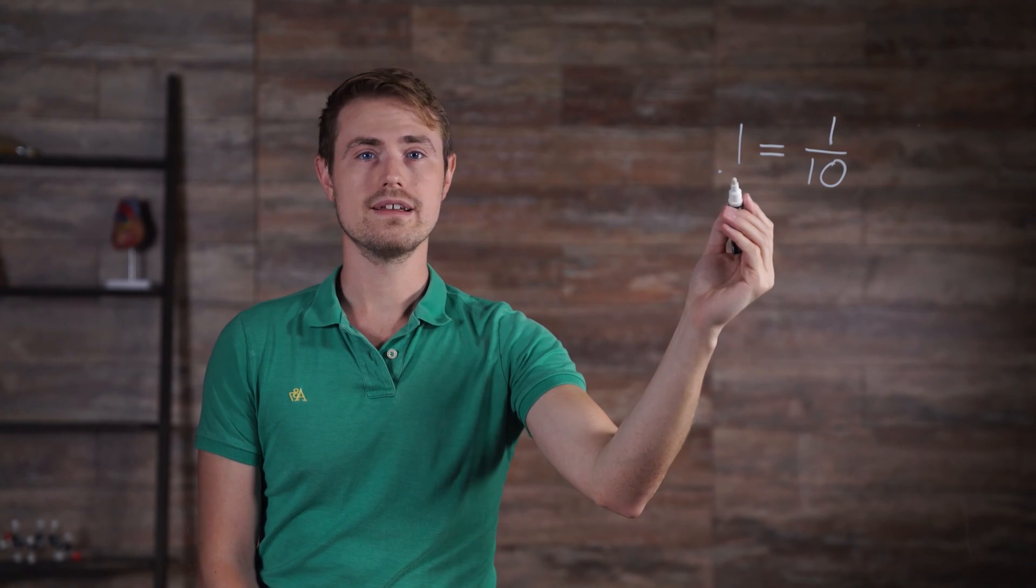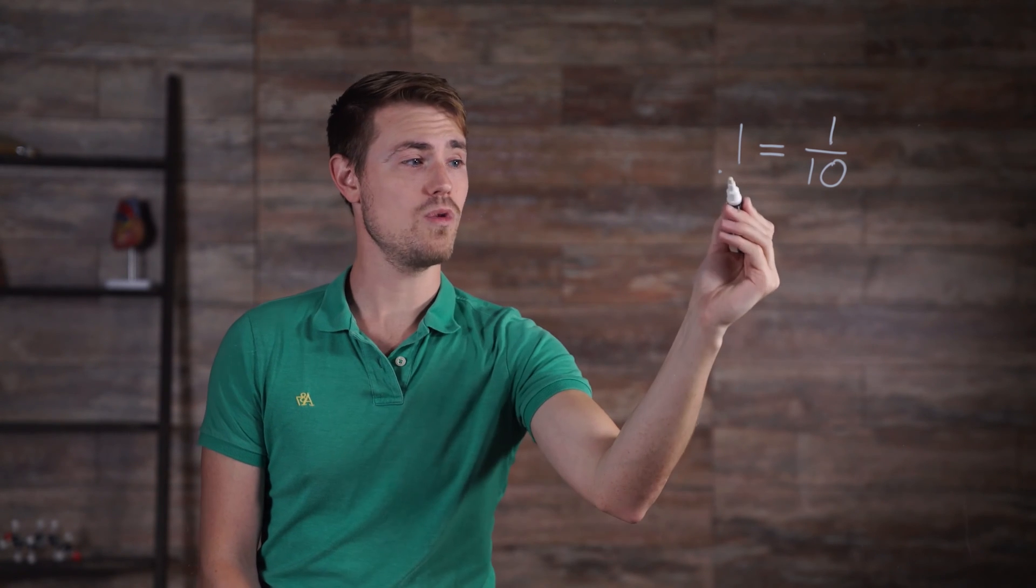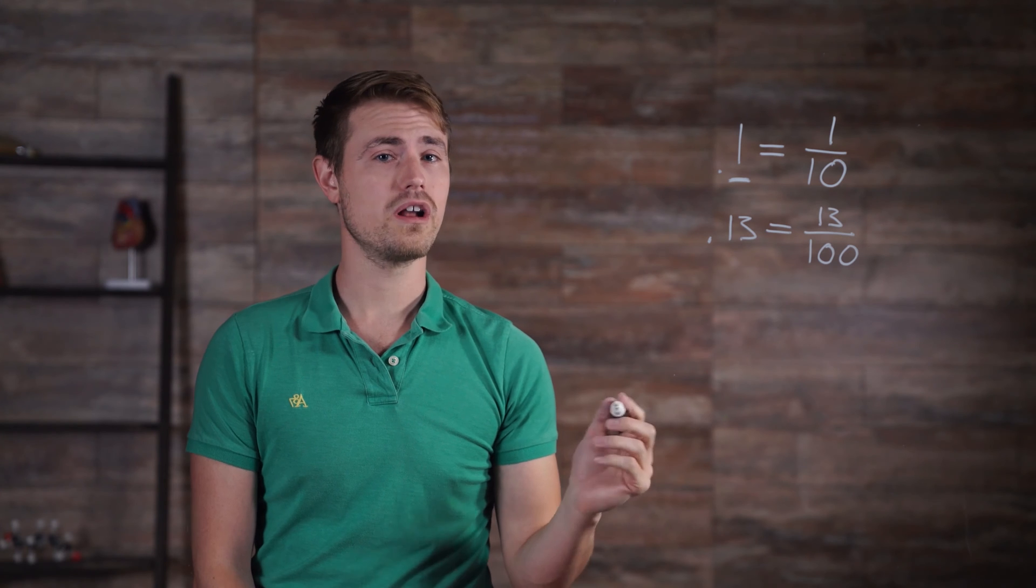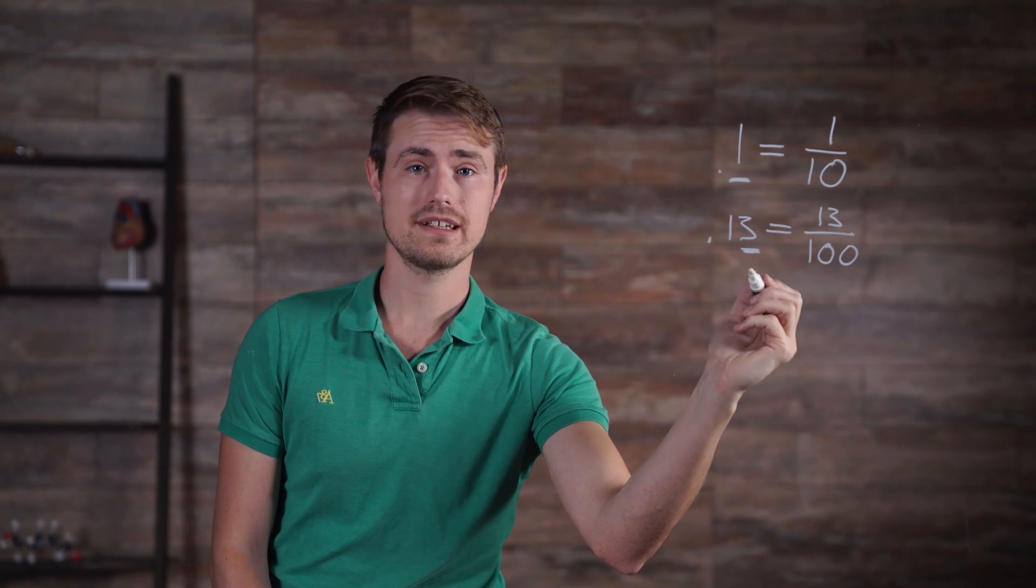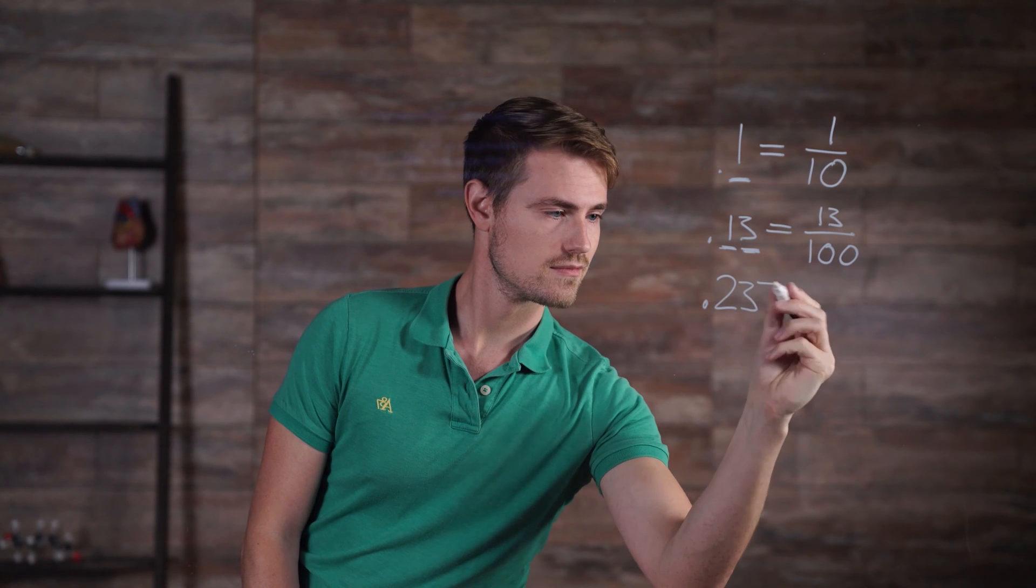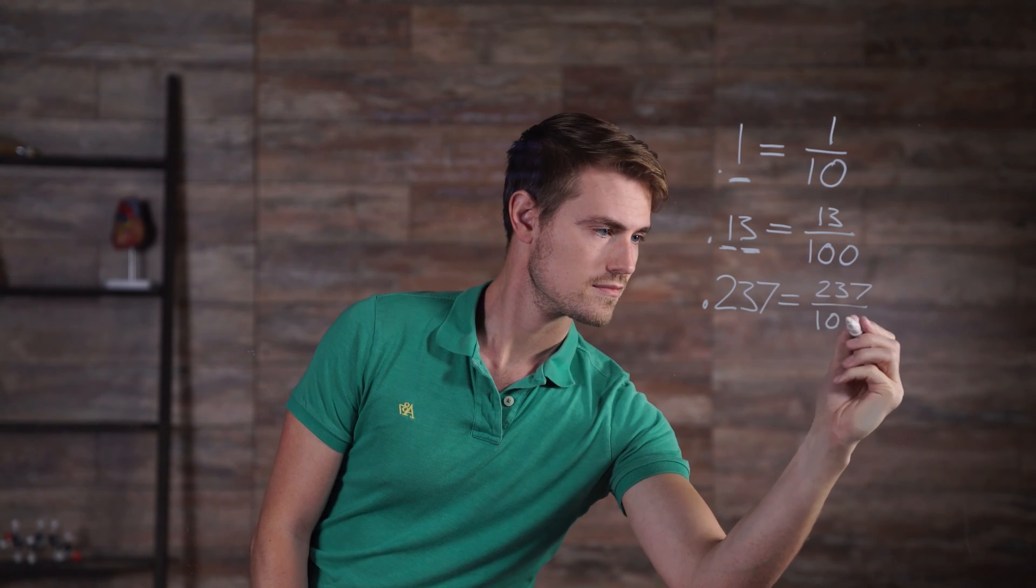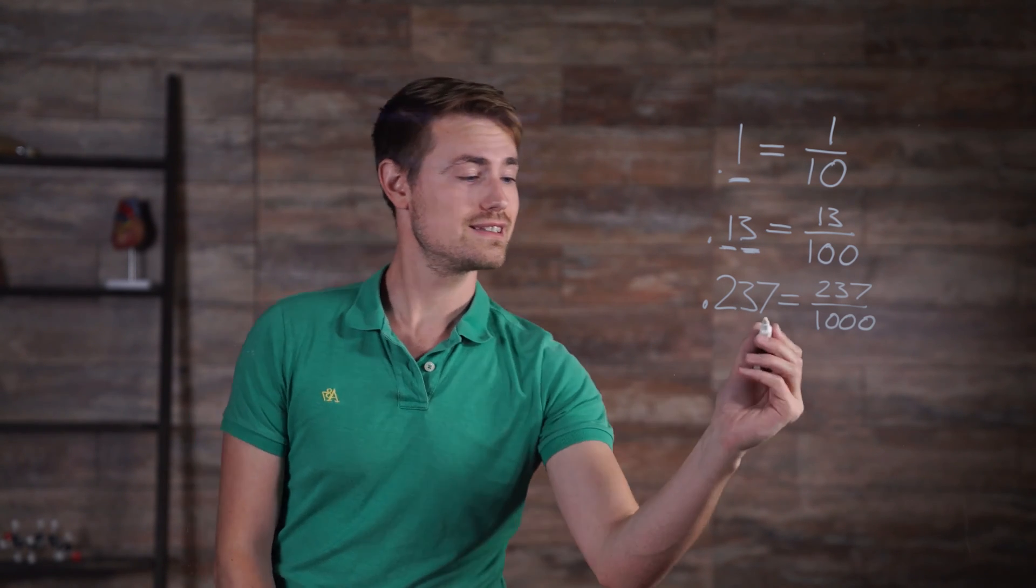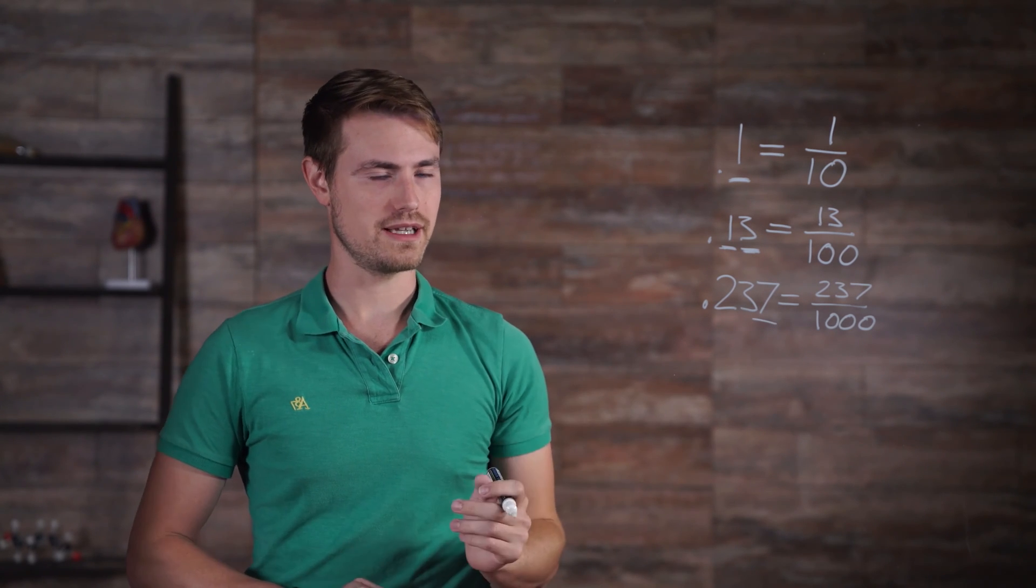Fractions can also be written as decimals. For example, 0.1 is equivalent to 1/10 because the 1 is in the tenths decimal place. 0.13 is equivalent to 13/100 because the 3 is in the hundredths decimal place and the 1 is in the tenths decimal place. 0.237 is equivalent to 237/1000 because the 7 is in the thousandths decimal place, and so on.